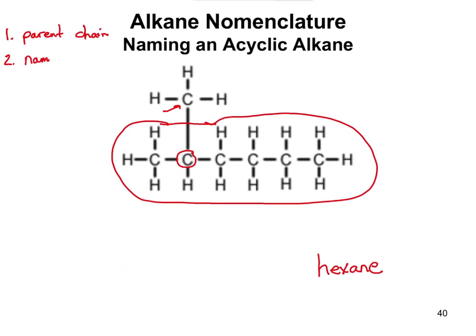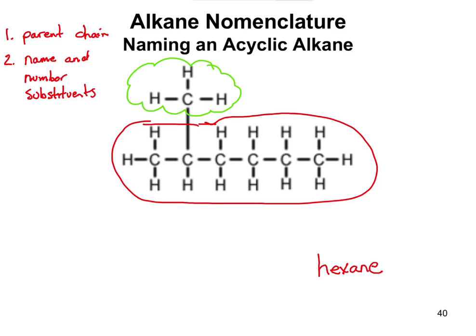Step two is to name and number the substituents. Substituents are anything not already included in the parent chain. The one carbon branching off the top is our substituent - I'll circle it in green. That substituent is one carbon long, so we call it a methyl group, just like methane but without one hydrogen, since that bond connects it to the parent chain instead.